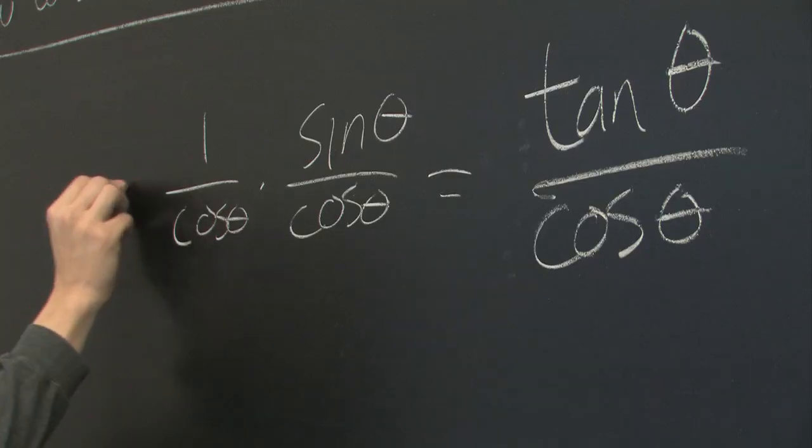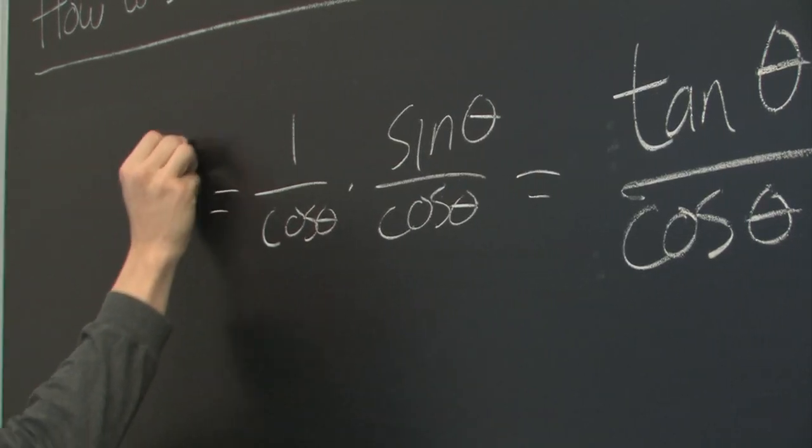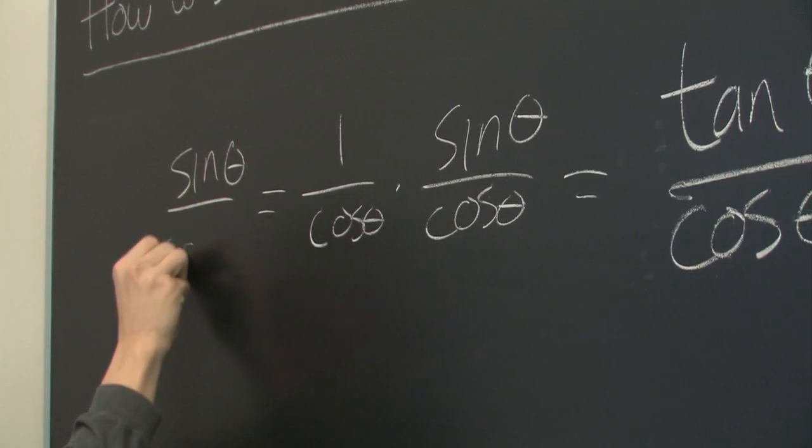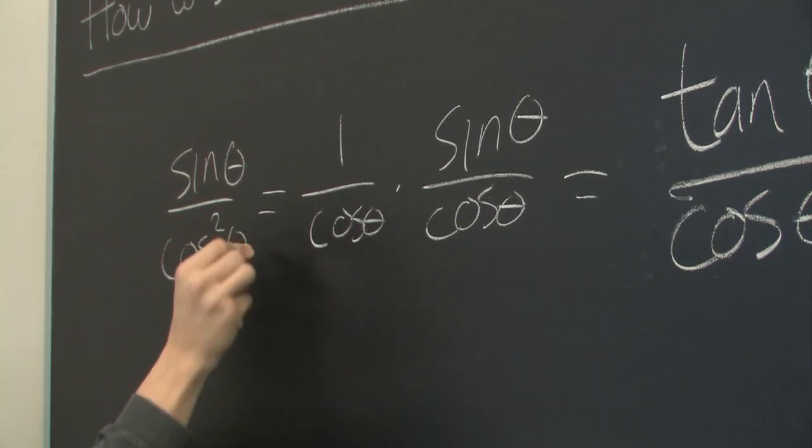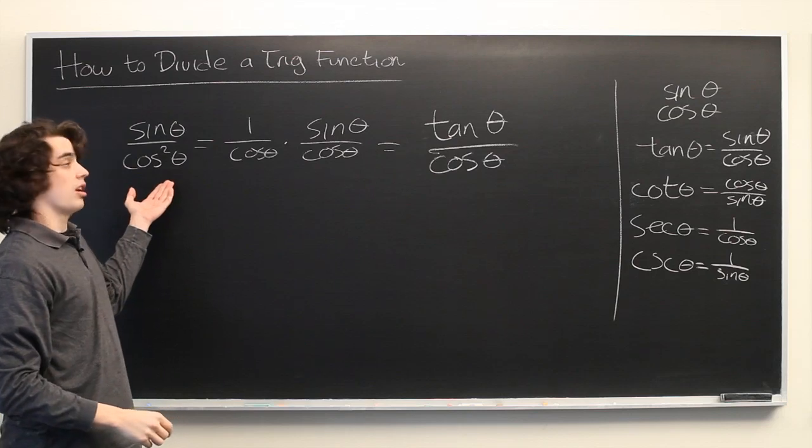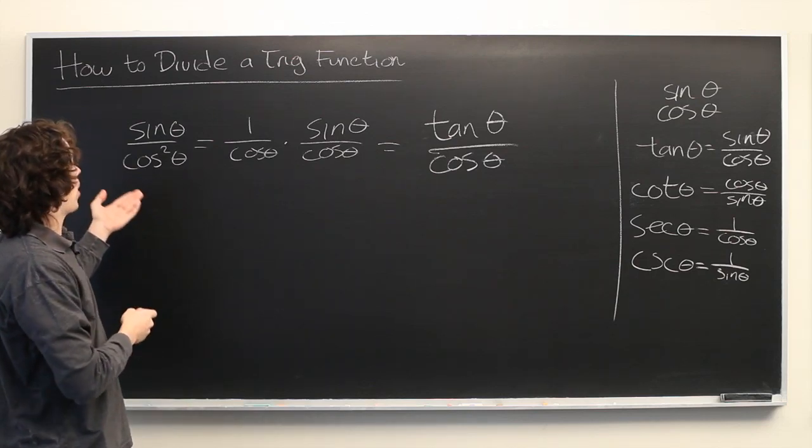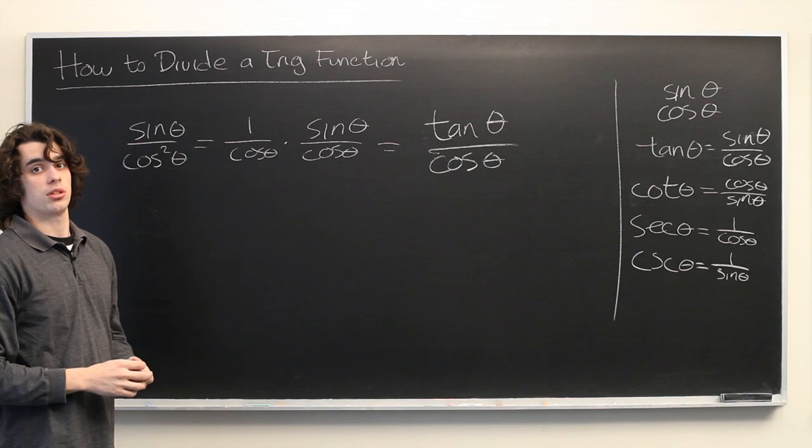So, one thing that we could write this as is sine theta over cosine squared theta. This would be an acceptable answer if you were trying to write this in a form that only uses the two basic functions of sine and cosine.